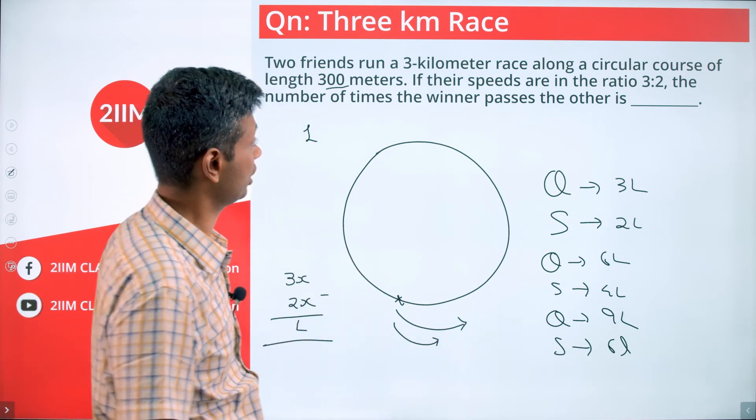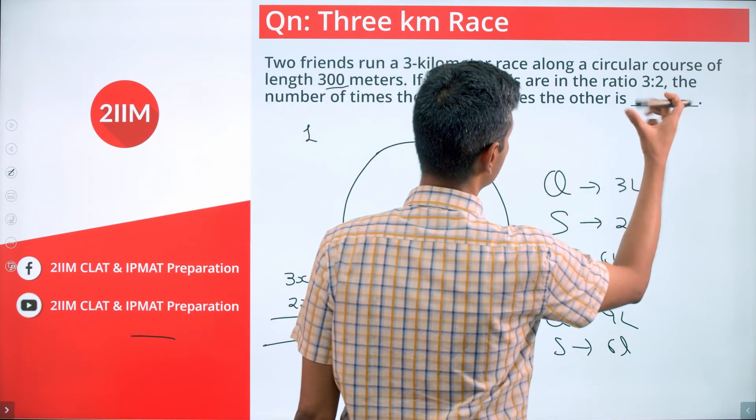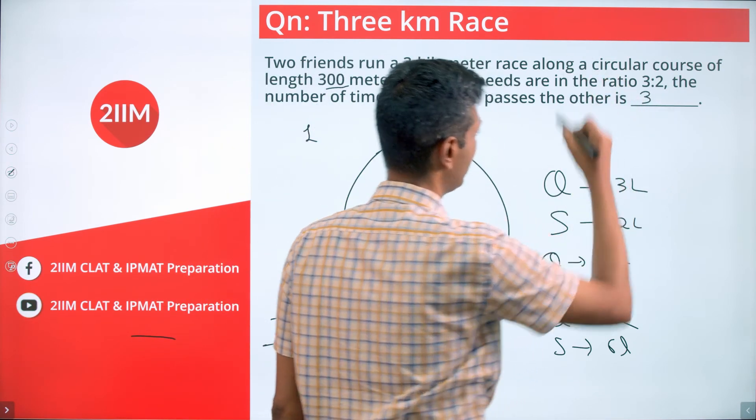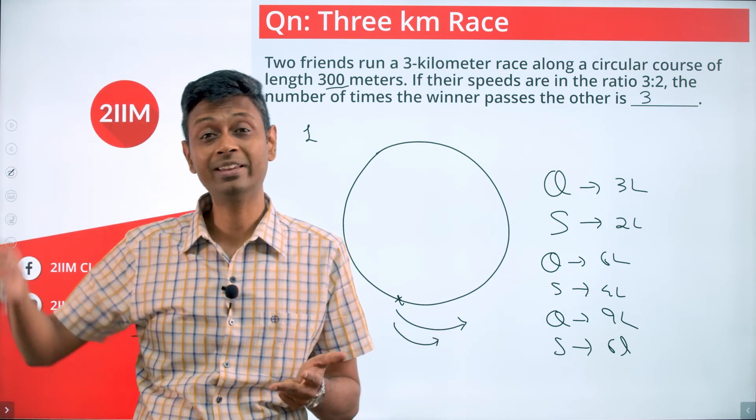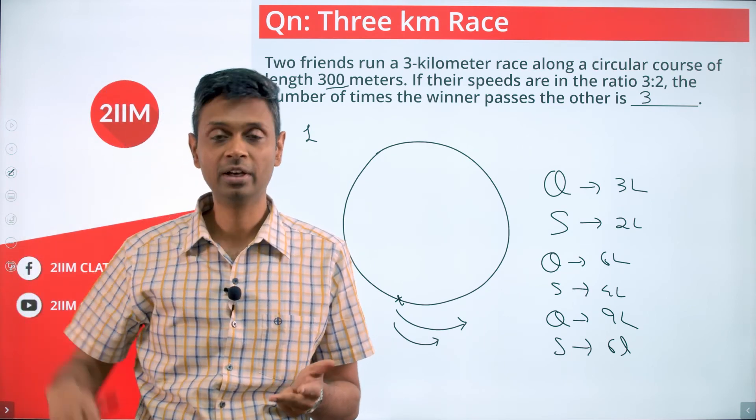He'll overtake or he'll pass the other thrice - 3 times. When he completes 3 laps, 6 laps, and 9 laps, when the slower guy at those points of time has completed 2, 4, and 6 laps.